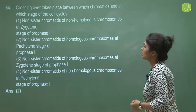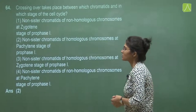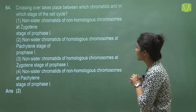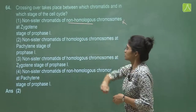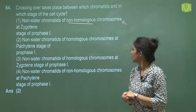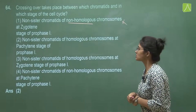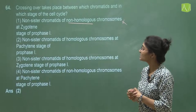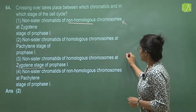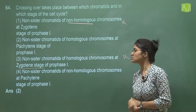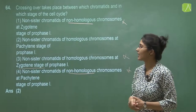Question 64 asks between which chromatids crossing over takes place and at which stage. Crossing over occurs at the pachytene stage. Option one says non-sister chromatids of non-homologous chromosomes — it should be homologous, so this is deleted. Option two says non-sister chromatids of homologous chromosomes at pachytene stage of prophase I — this is correct. Option three says non-sister chromatids of homologous chromosomes at zygotene stage — zygotene is wrong. Option four says non-homologous chromosomes — also wrong. The correct answer is option two.